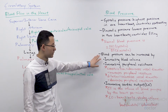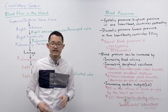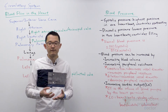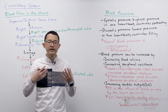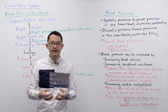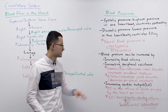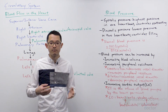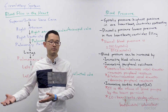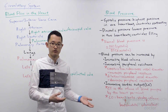Blood pressure can be affected by three different factors. The first is changes in blood volume. You can think of the blood vessels as a container for the blood. If you drink more fluid you increase blood volume, and with more volume in essentially the same size container, that's going to increase blood pressure. When you drink less fluid and are dehydrated, your blood pressure goes down.